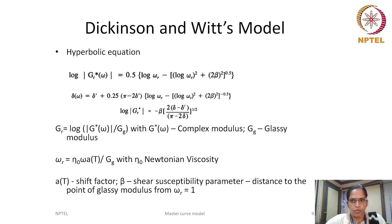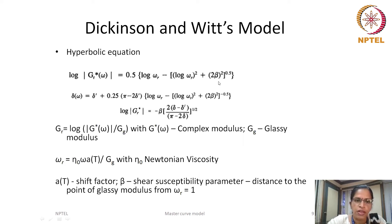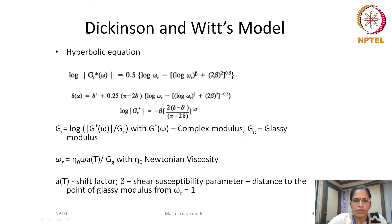The next model is Dickinson and Witts' model. He used hyperbolic equations to describe the dynamic modulus and phase angle of a binder. There are two expressions: one for dynamic modulus and one for phase angle. The relative modulus GR as a function of omega is related to the reduced frequency and another factor beta by a parabolic function, where beta is a shear susceptibility factor which depends on the material. These two expressions for dynamic modulus and phase angle are related to each other.